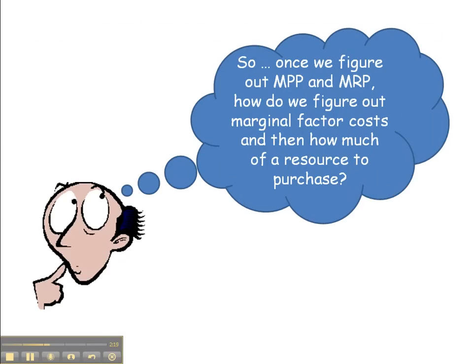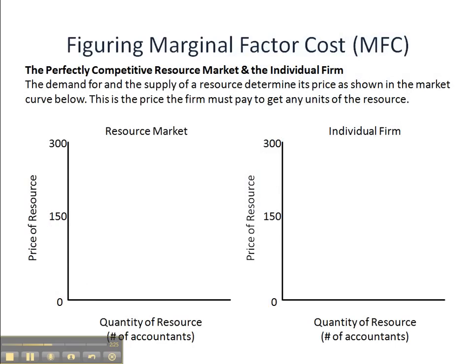First, we have to figure out marginal costs, and then figure out exactly how much of a resource to purchase. To do that, I've employed a two-panel analysis. I've looked at the resource market on the left-hand side and the situation faced by the individual firm on the right-hand side. Our vertical axis is the price of a resource in both cases, and our horizontal axis is the quantity of the resource, again in both cases. We're looking at a price range of $150 up to $300.